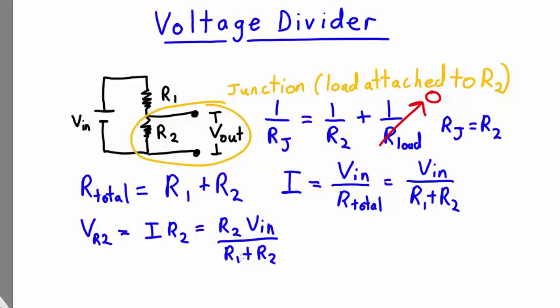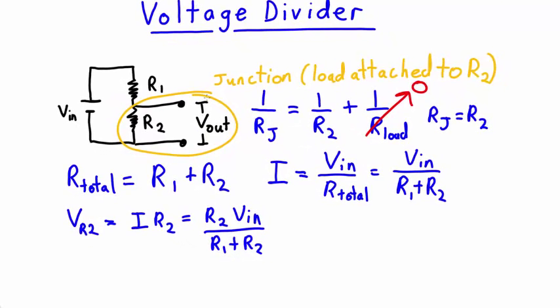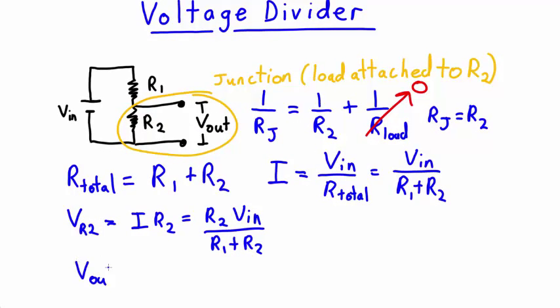But using the loop rule, we know that the voltage across R2 must be the same as the voltage across the load, Vout. Therefore, the voltage Vout equals R2 times Vin divided by R1 plus R2. This is the formula for the output of a voltage divider circuit.